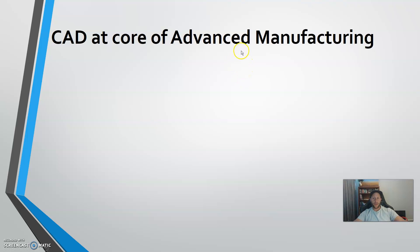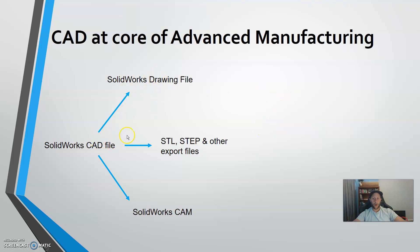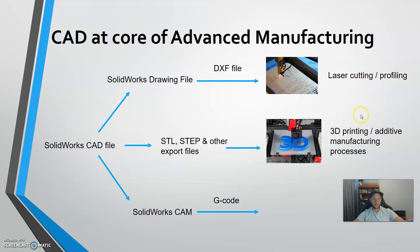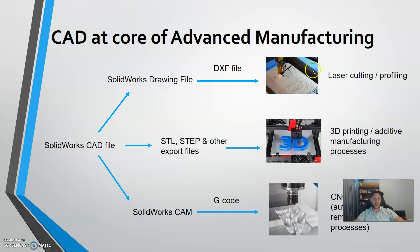From your point of view as a student and up-and-coming designer or engineer, CAD is at the core of advanced manufacturing. We begin with a CAD file — we can design a part, then take that file and create a two-dimensional technical drawing from it. We can also export that file into other formats such as STL and STEP. Within SOLIDWORKS we can convert this file into a manufacturing file for laser cutting and profiling, additive manufacturing such as 3D printing, and also CNC machining — all available at school to realize your design all the way through to manufacturing.